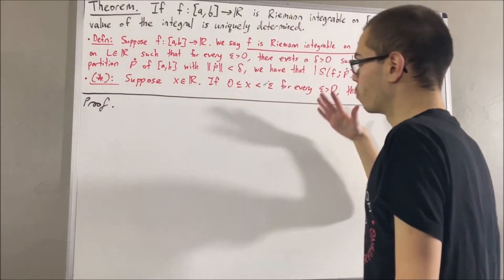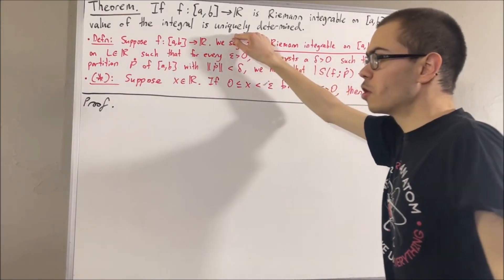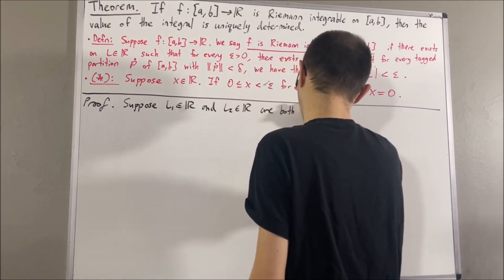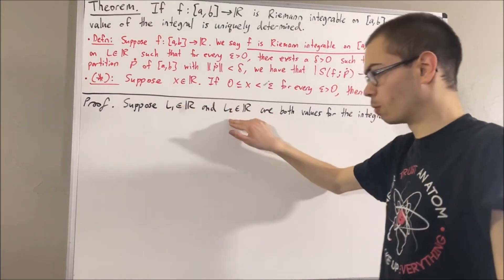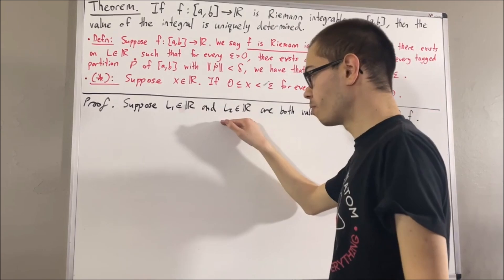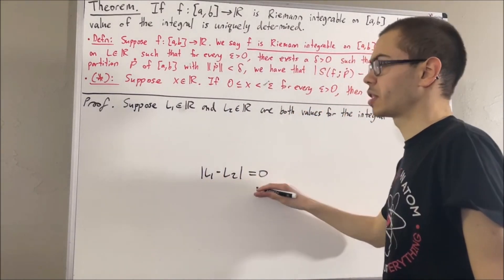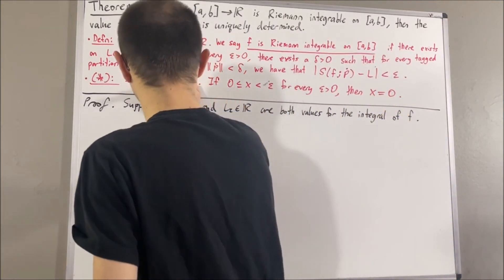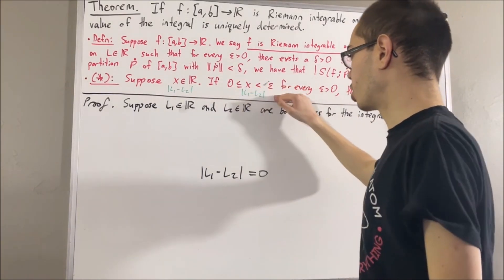The goal is to prove that the real number L is the only real number satisfying this statement. To prove uniqueness, suppose we have two real numbers which satisfy this statement — call them L1 and L2. Suppose L1 and L2 are both values for the integral of f. The goal is to prove L1 equals L2, because that will prove the value of the integral is uniquely determined. To prove L1 equals L2, it suffices to show that |L1 − L2| = 0, which we will show using our preliminary result.